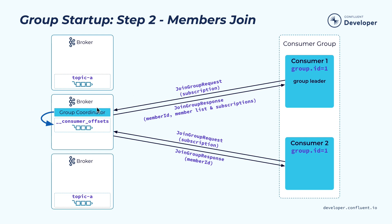One of the tricky things we have to deal with is we want the assignment of the load to those consumer members to be pluggable — to be determined by the consumer instances instead of the broker — because we want to provide more flexibility to the application. Because of that, the group coordinator actually doesn't know how to assign the load. So instead, what it does is pick one of the group members, typically the first member who joined the group, as the group leader.